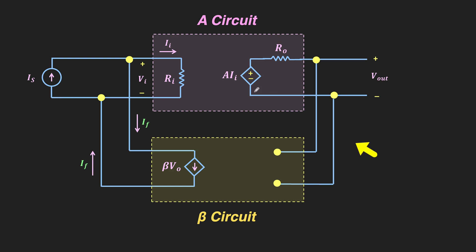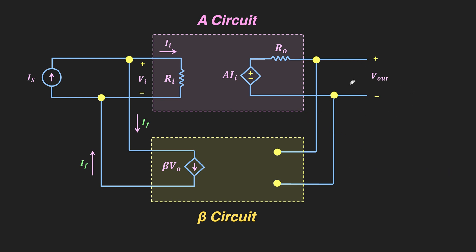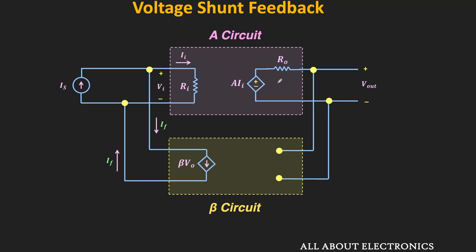If you see the unit for this trans-impedance amplifier gain, it will be in ohms, because the output is a voltage signal while the input is a current signal. Here, R0 is the output impedance of the basic amplifier.